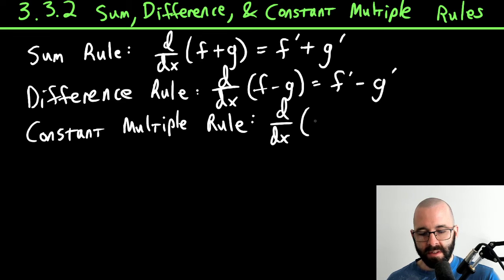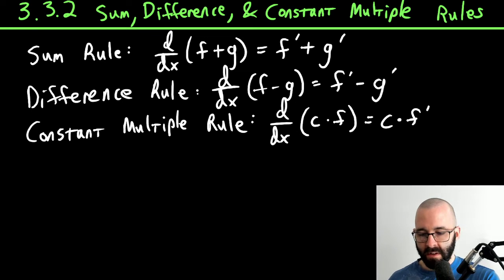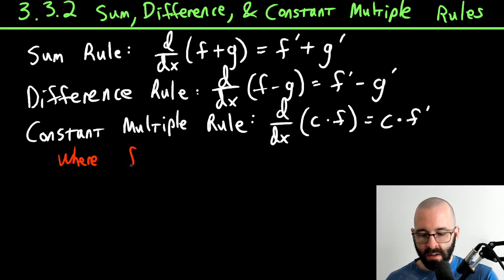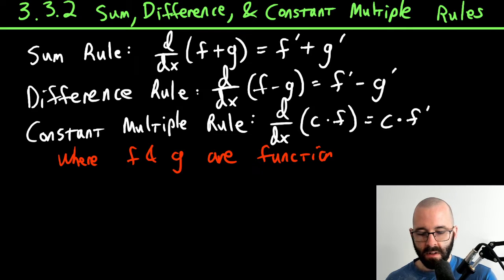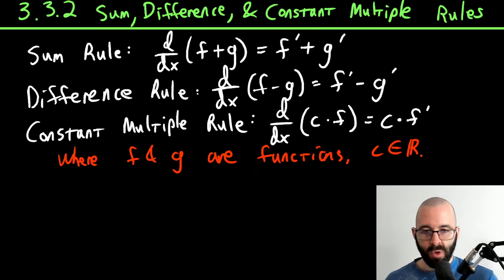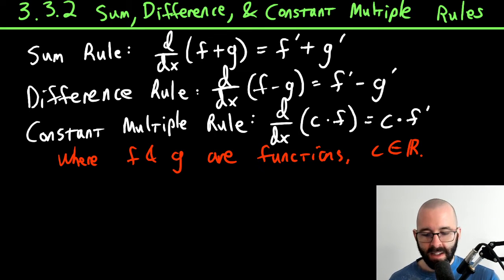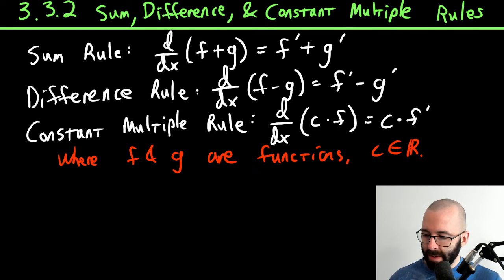The constant multiple rule says the derivative of some constant times a function is that constant times the derivative. To be very clear: f and g are functions, and c is some real constant — although it's true for complex numbers too, we're not going to worry about those. Let's get some practice with these.